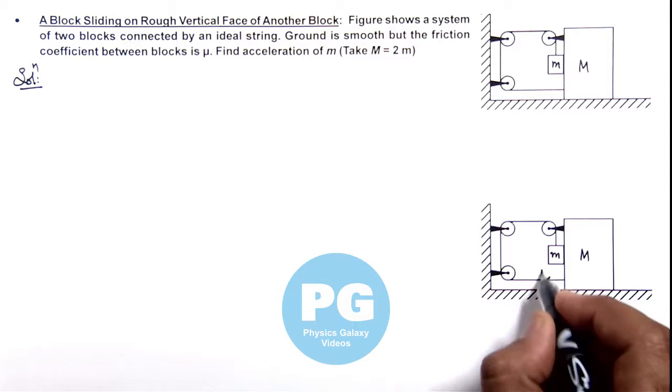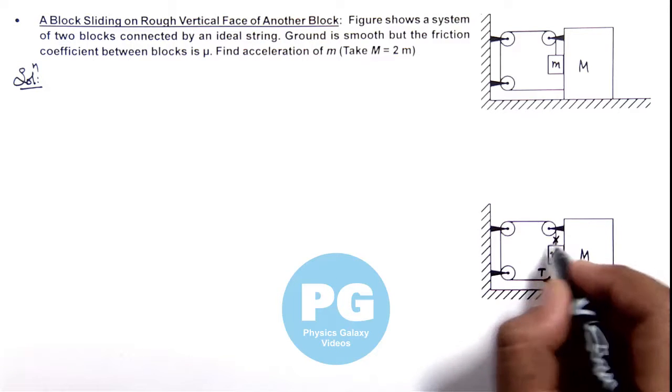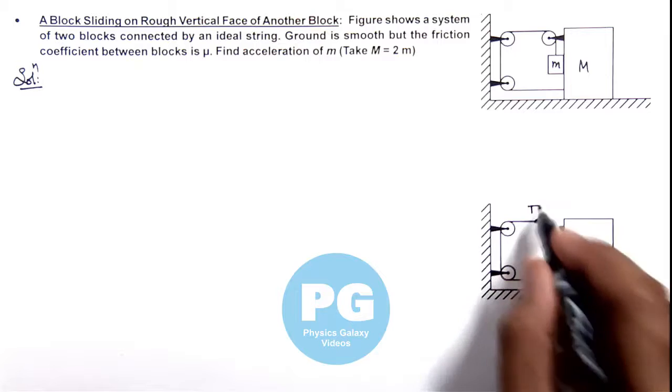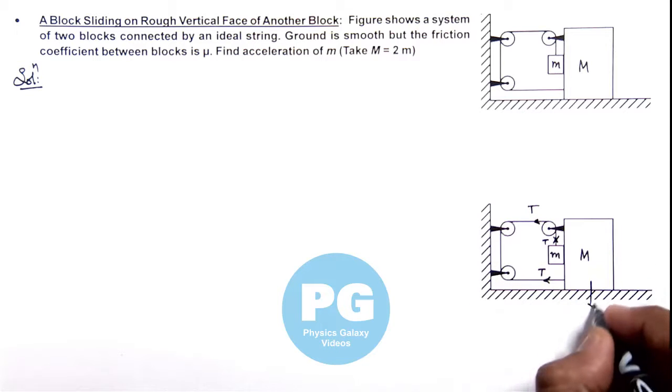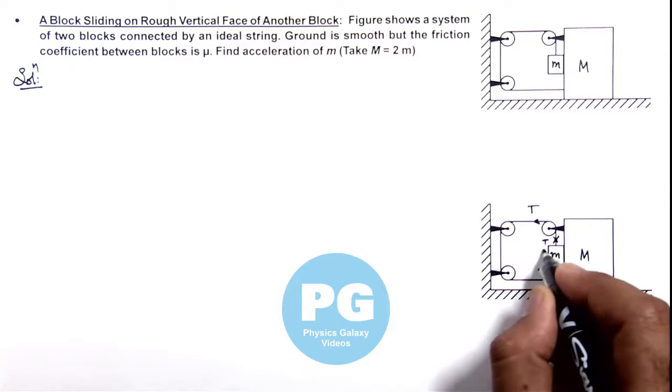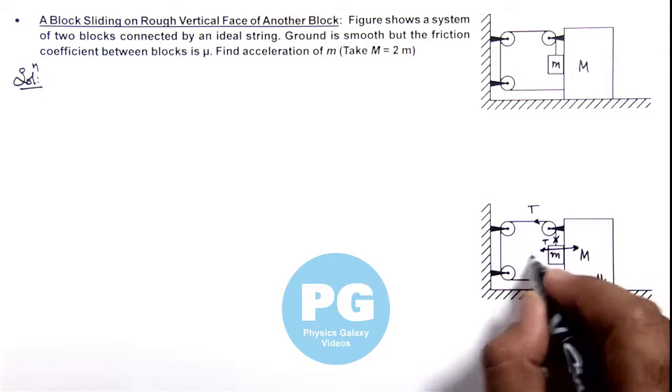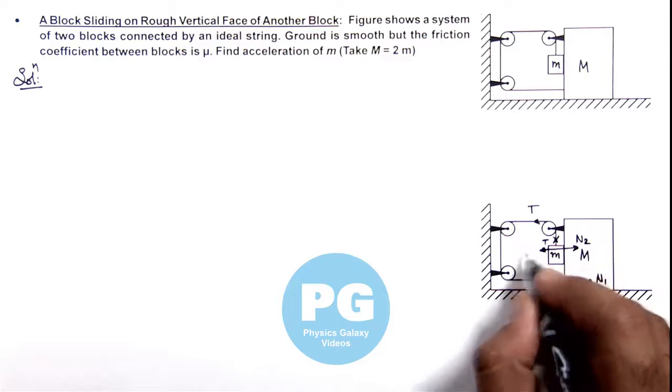If string tension is taken as T everywhere, the tension value will remain T. A normal reaction will be acting between capital M and ground, say it is N1, and another normal reaction is acting between the small block and M, say it is N2.